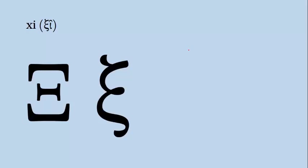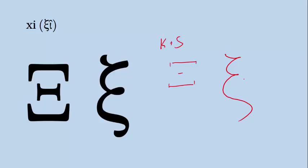Next up we have our letter Xi, which roughly works the way an English letter X does. It's another of our double consonants — the sound you're getting is that K plus S sound, or Kappa plus Sigma. It makes the X sound as in the English word 'taxi.' To draw an uppercase Xi, you draw three parallel lines where the middle one is shorter. For a lowercase Xi, we do it similarly to a Zeta — draw a horizontal bar, then make a backwards three before adding the curly Q at the bottom. An example of an important Greek word with Xi is the word 'xenos,' which means 'foreigner.'